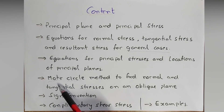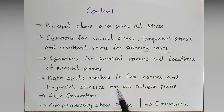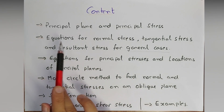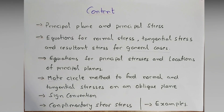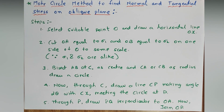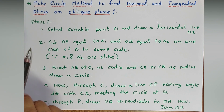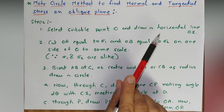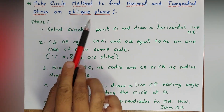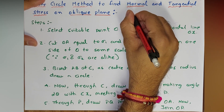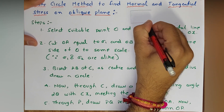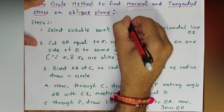In this lecture we are going to see Mohr's Circle method to find normal, tangential, and resultant stress on any oblique plane. So what we studied in the second lecture will now be understood by Mohr's Circle method — that is, Mohr's Circle method to find normal and tangential stresses on an oblique plane.